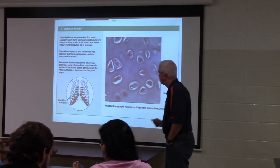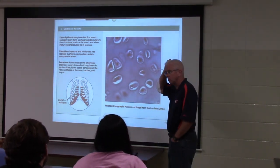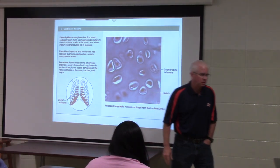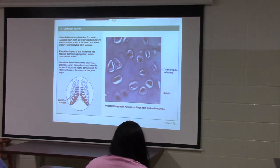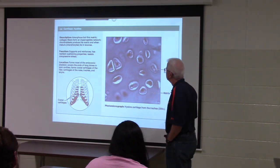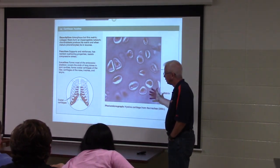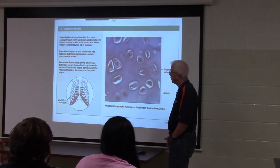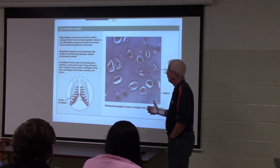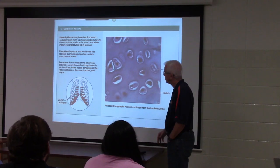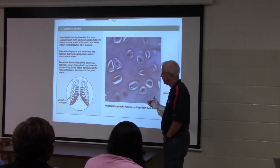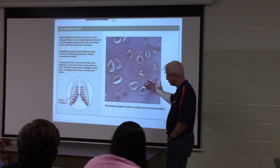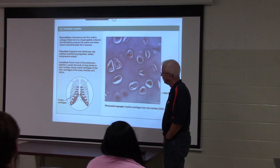Next up on the slides is Carlin. The instructor coordinates where the class is: they've talked about connective tissue, emphasizing proteins that define tissues. Cell types introduced include fibroblasts for connective tissue proper, chondroblasts for cartilage, osteoblasts for bone, and hemocytoblasts for blood.